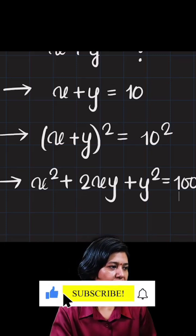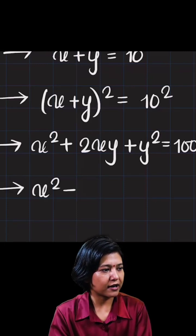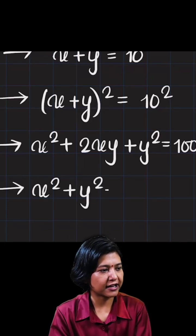which is 100. And now the question has told you to find the value of x squared plus y squared, whereas they have given you the value of xy.